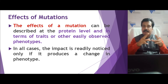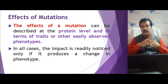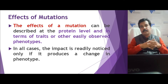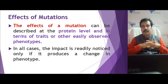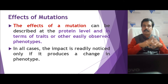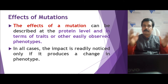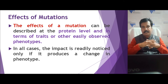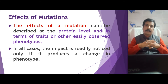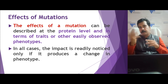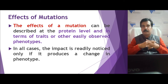These triplet codons produce 64 types in total. Based on these 64 codons, the 20 amino acids are produced. That means three different triplet codons can code for the same amino acid.